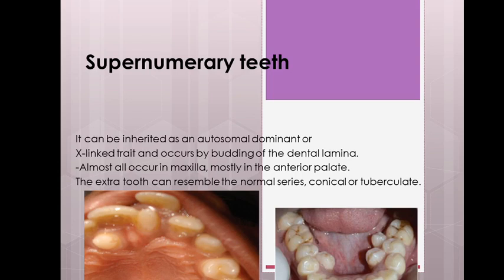The incidence of supernumerary teeth in the primary dentition is 0.2 to 0.8 percent, with male to female ratio unknown. In the permanent dentition, it is 1.5 to 3.5 percent, with a male to female ratio of 2 to 1.